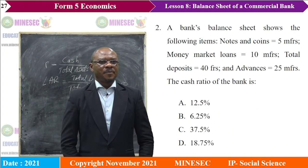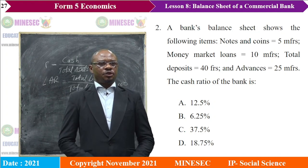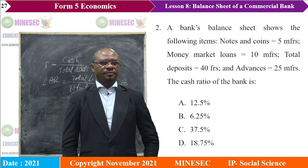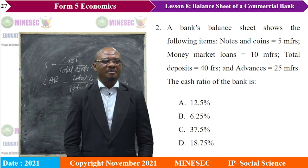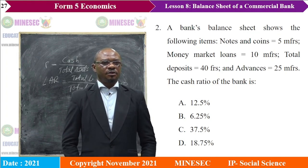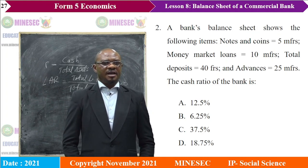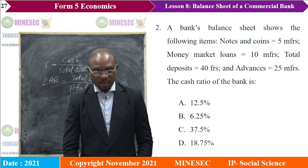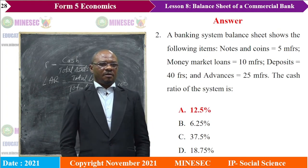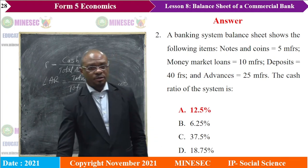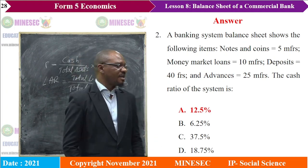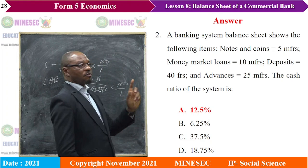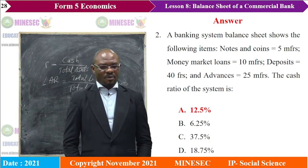Question two: a bank's balance sheet shows the following items — notes and coins 5 million francs; money market loans 10 million francs; total deposits 40 million francs; advances 25 million francs. What is the cash ratio of this bank? The correct answer is 12.5%. Remember that cash ratio is cash over total assets times 100 over 1.